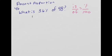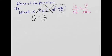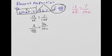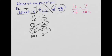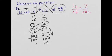We're going to do percent proportion again. Formula: is over of equals percent over 100. 36 is my percent. My total (of) is 98. The part I'm looking for (is) is x. So: x over 98 equals 36 over 100. Butterfly: 100x equals 3,528. Divide by 100 on both sides, and x equals 35.28.